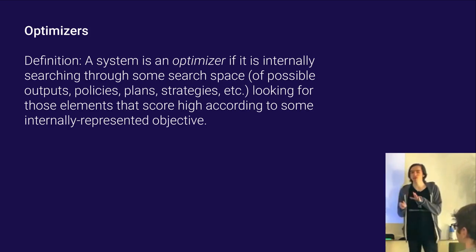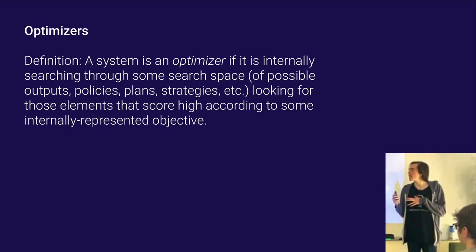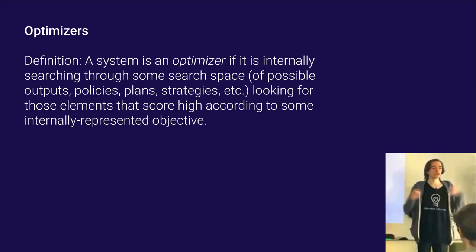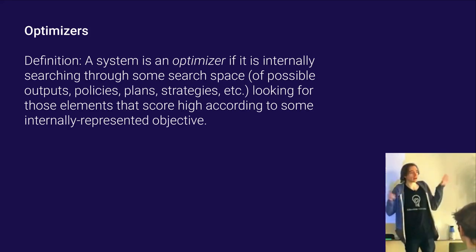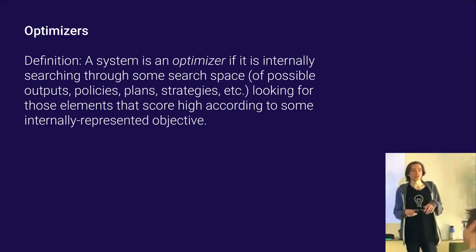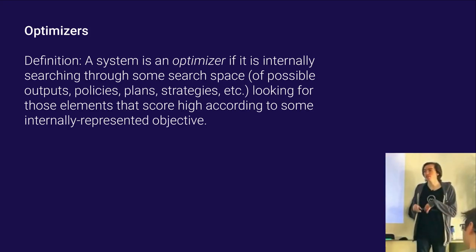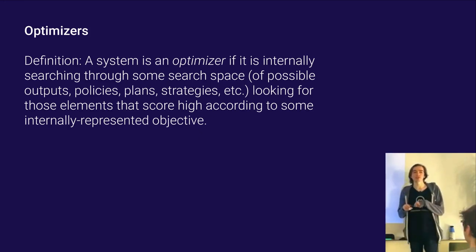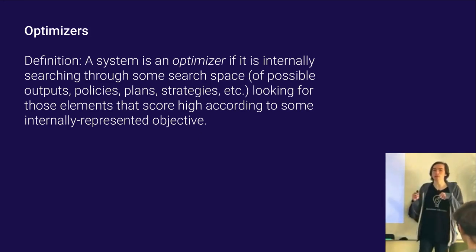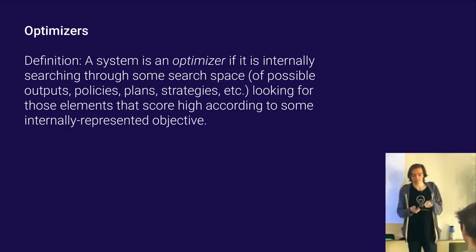The specific situation I want to address is where the algorithm itself is doing some sort of optimization. We're going to say that a system is an optimizer if it is internally searching through some space of possible plans, strategies, or actions for those that score highly on some criteria — maybe looking for actions that would get low loss, or gold coins, or do a good job of predicting the future.